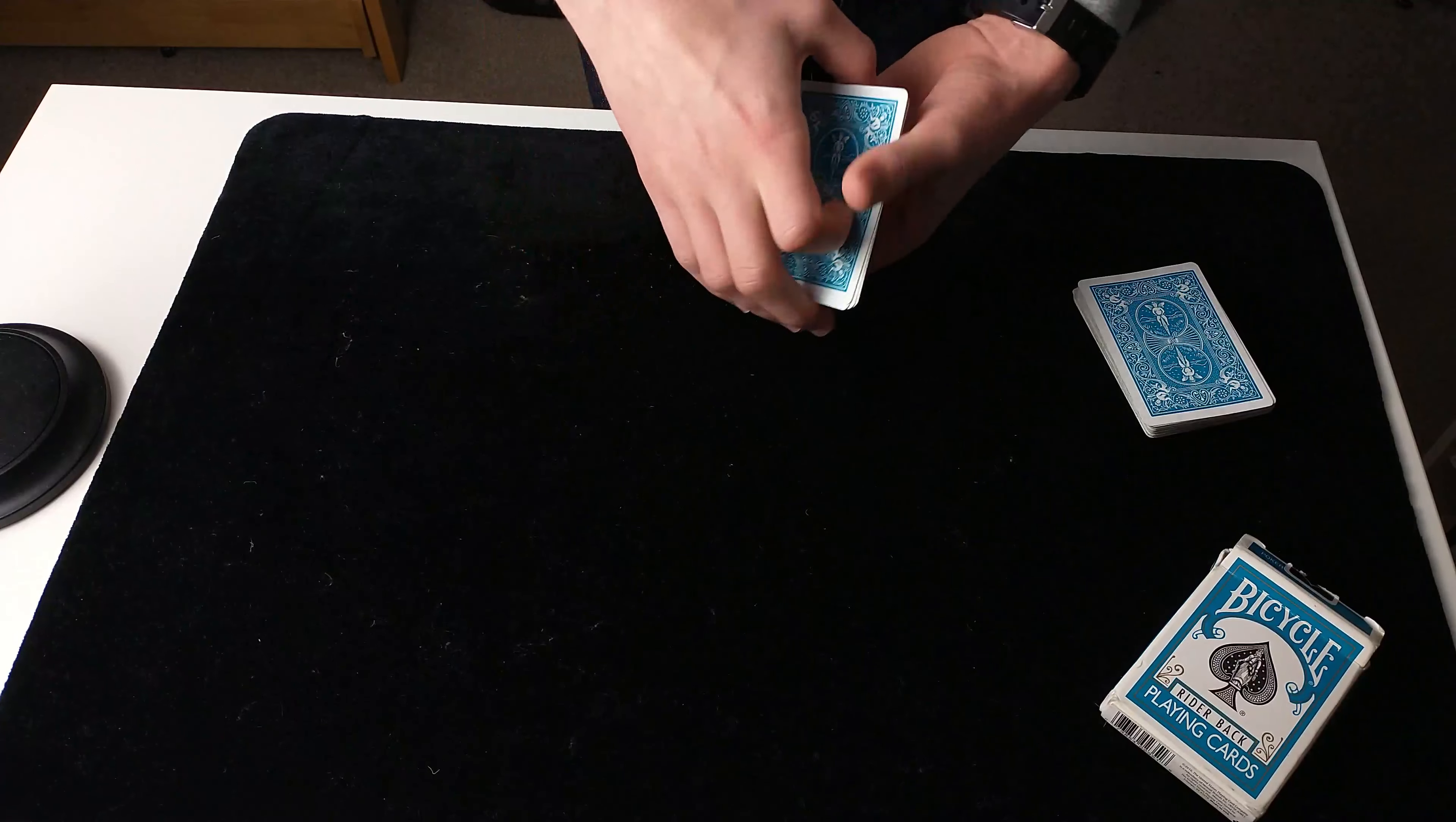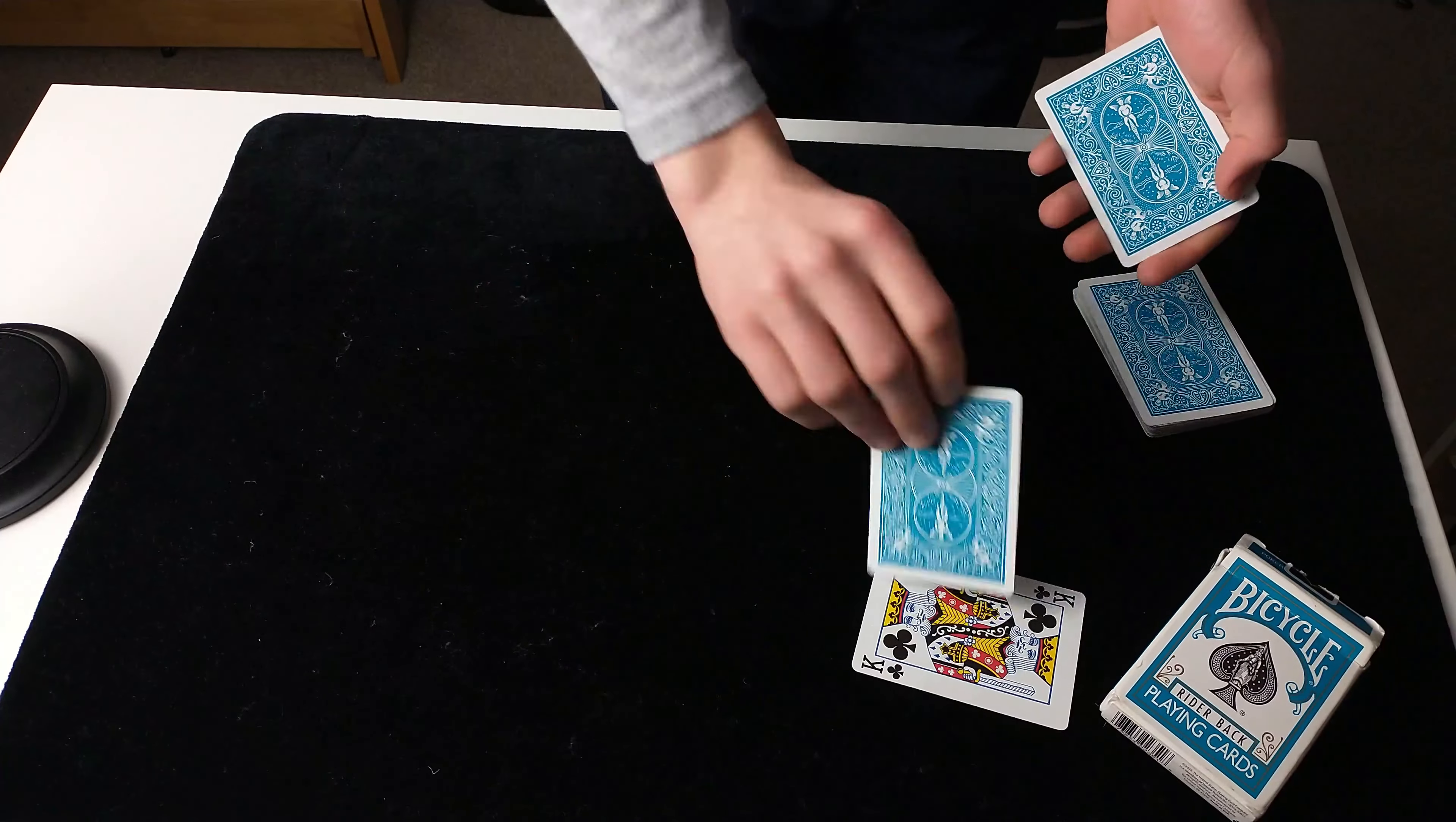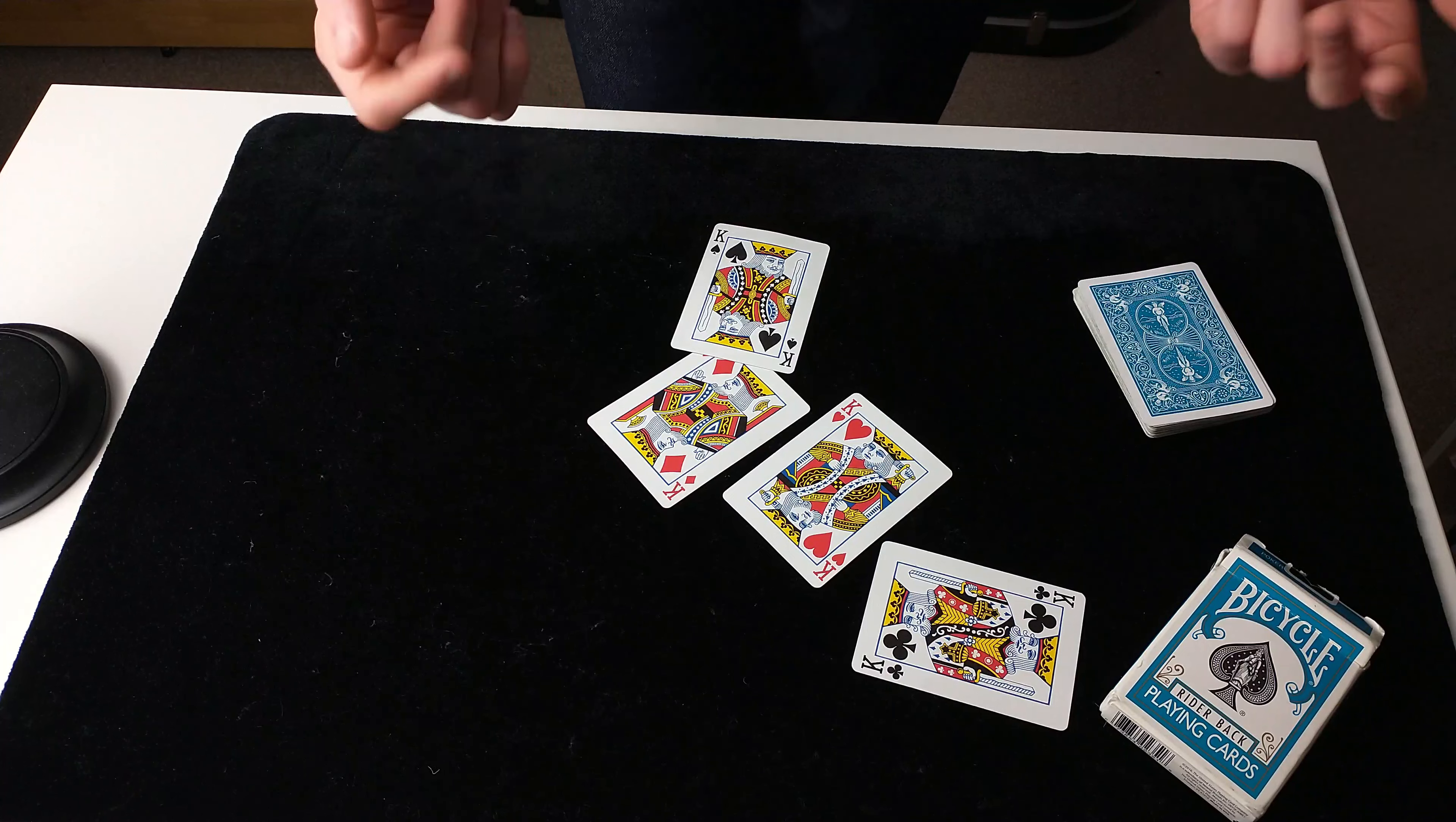Four duplicate kings, that's not normal, which is why, watch. One, two, three, four. Four different kings. That is magic.